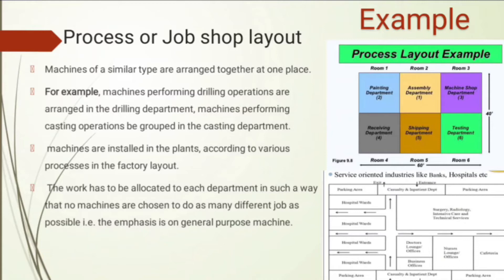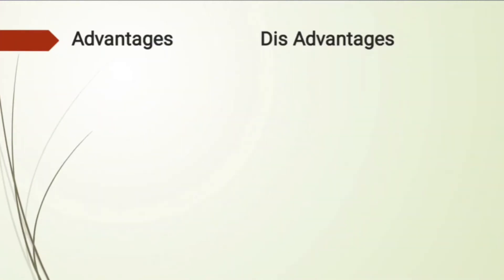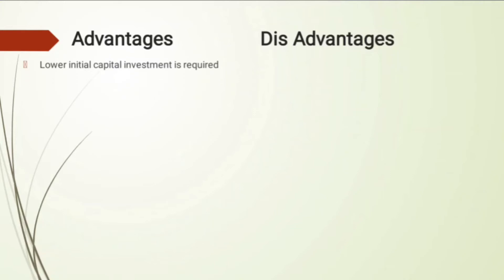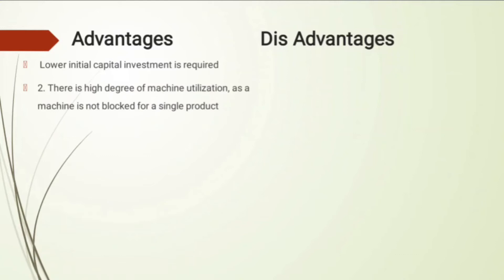The process layout is very different from the product layout. In the product layout, the layout was defined based on operations performed on the product — for example, making a refrigerator on a dedicated line. Here in the process layout, the layout is defined on the basis of the processes performed. The advantages and disadvantages of these two layouts are also reciprocal to each other.